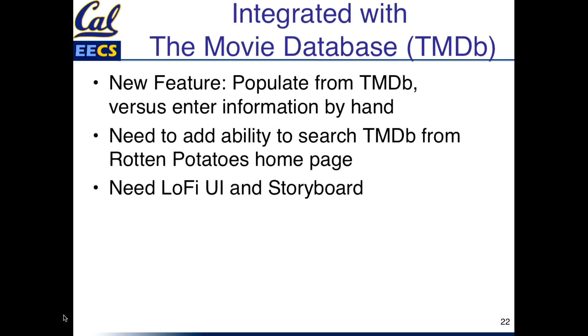Our application is going to use The Movie Database, TMDB — you probably all know about it. Instead of typing in all that stuff manually, the new functionality we want to add is to populate the form directly from the TMDB. So we're going to need the ability to search the TMDB from the Rotten Potatoes home page, with a lo-fi user interface and a storyboard — putting all the pieces together for what you're going to do in projects.